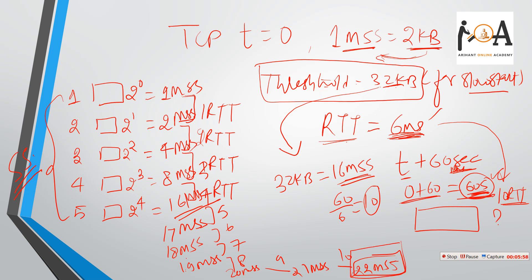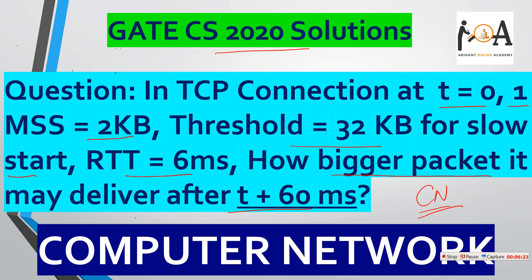After 60ms, we are at the 10th RTT, which gives us 22 MSS. Since 1 MSS equals 2KB, 22 MSS multiplied by 2KB equals 44KB. So 44KB is the correct answer for this numerical question.